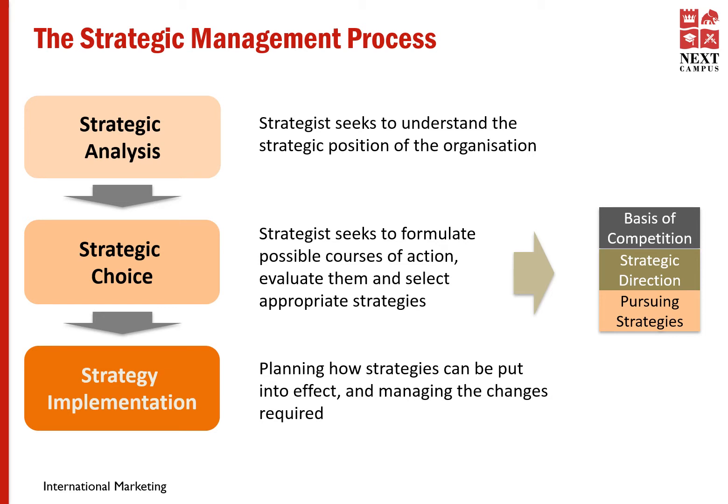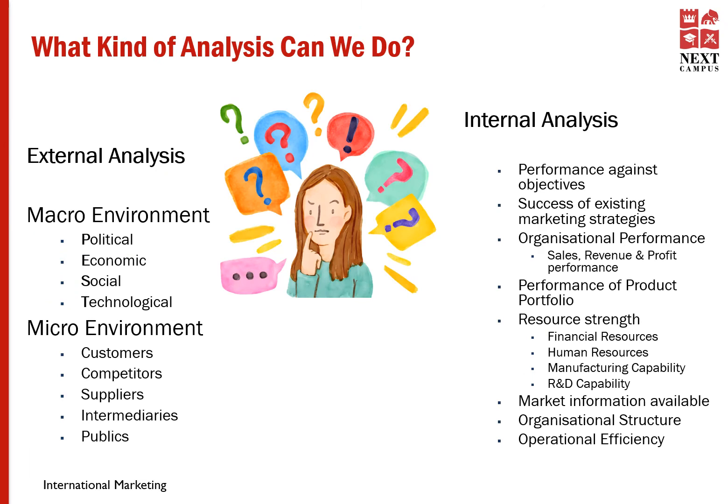Strategic direction is where you decide on your products and markets. Pursuing strategies involves your segmentation, targeting, and positioning. Then you need a plan for strategy implementation — the marketing mix elements, the four Ps or seven Ps — you play around with them in order to make your marketing plan.